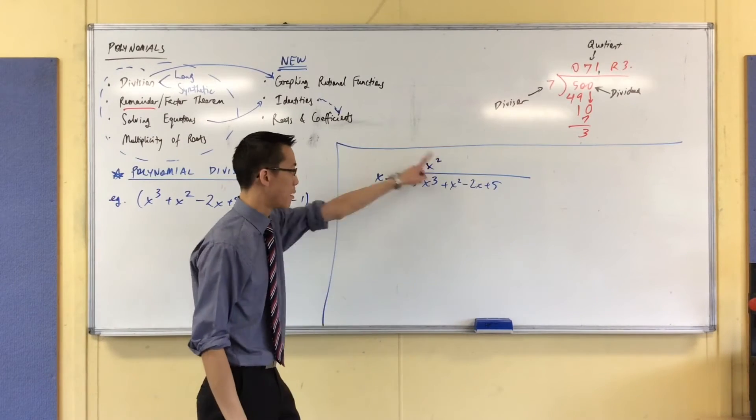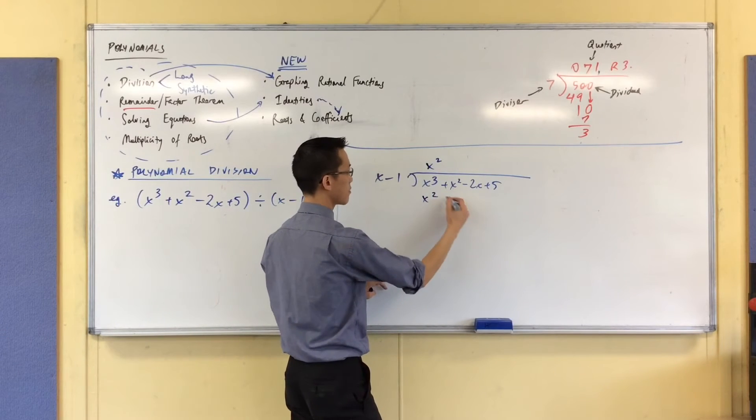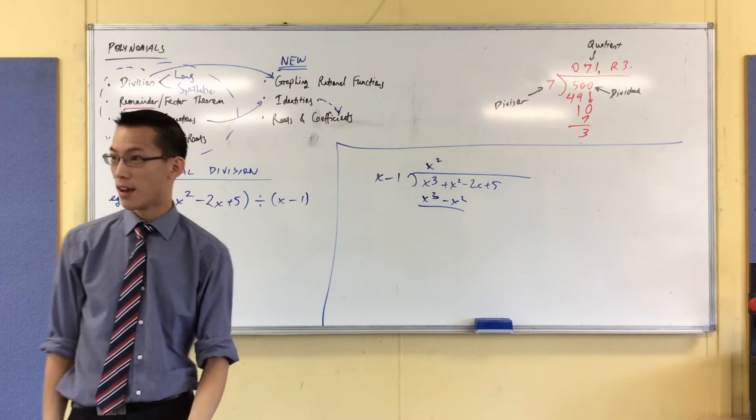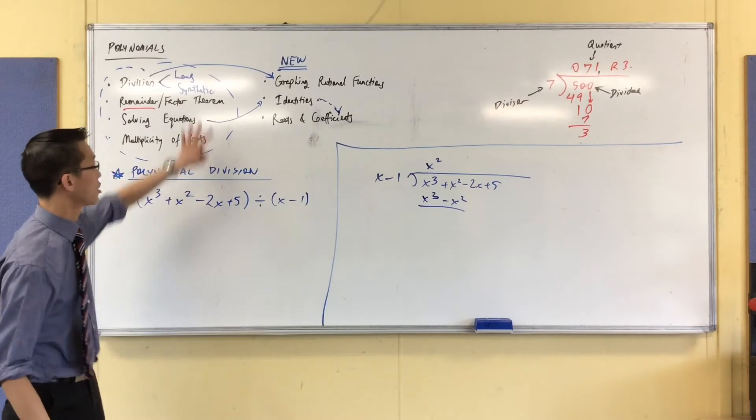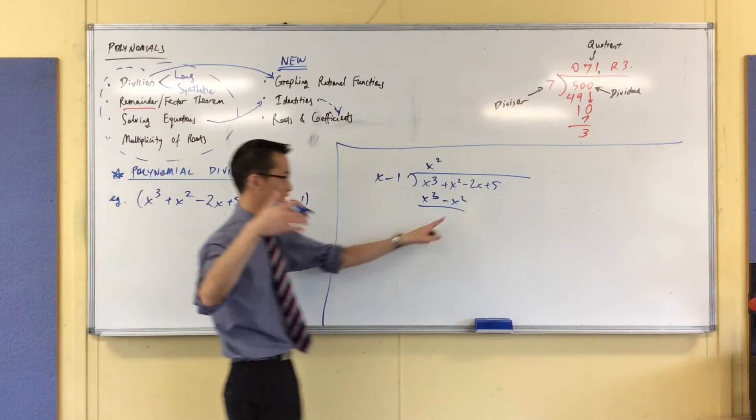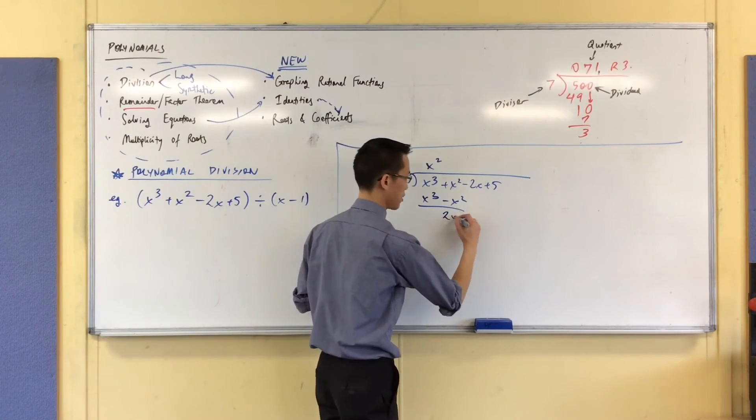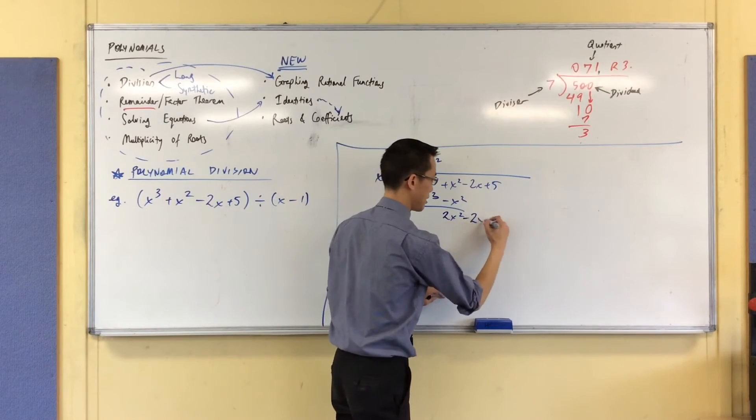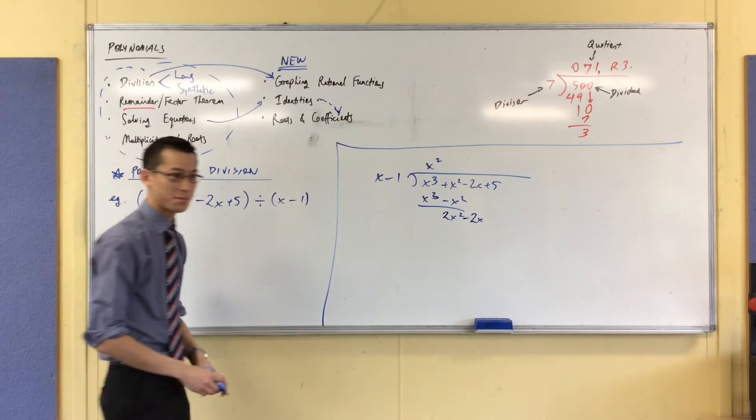And now the process begins. I multiply it down and I do my subtraction. So I multiply, and I do my subtraction. Now watch out for your negatives. The negatives are the things that catch people out in polynomial long division, which is one of the reasons why I'm going to show you this other method in case you've never seen it before. So I've got x squared, and I'm going to take away negative x squared, which leaves me with 2x squared. It's a positive. I'm going to bring the minus 2x down, and then I pose the question again. How many x's go into 2x squared? 2x.